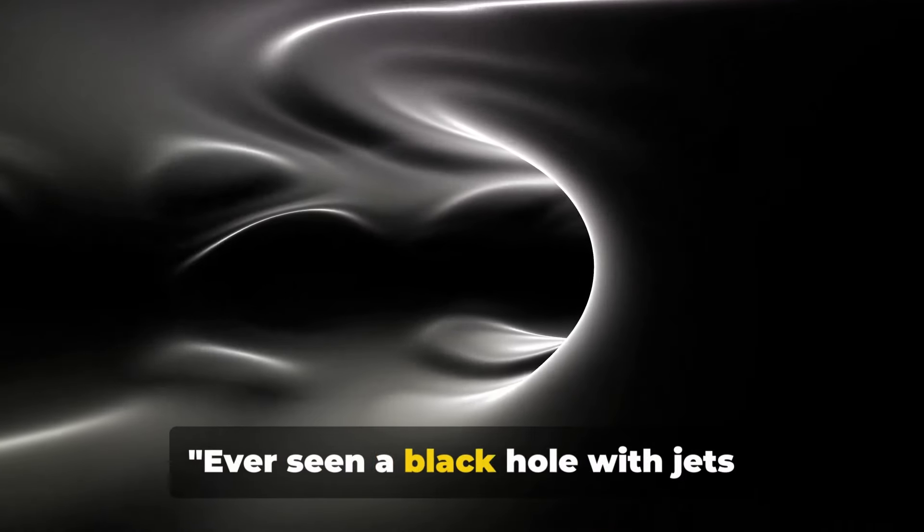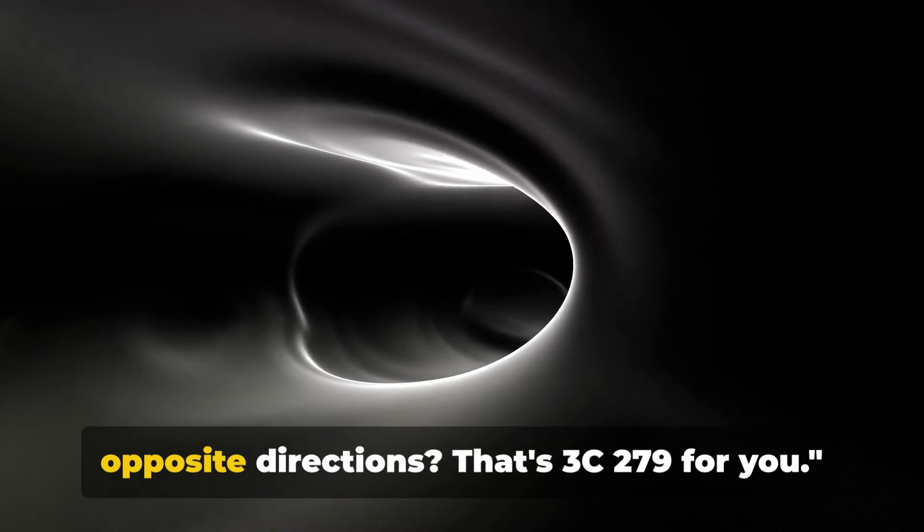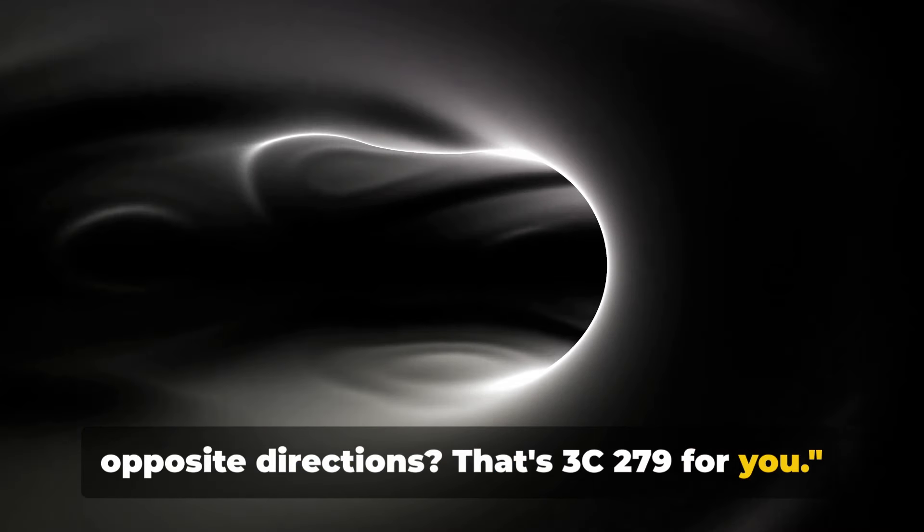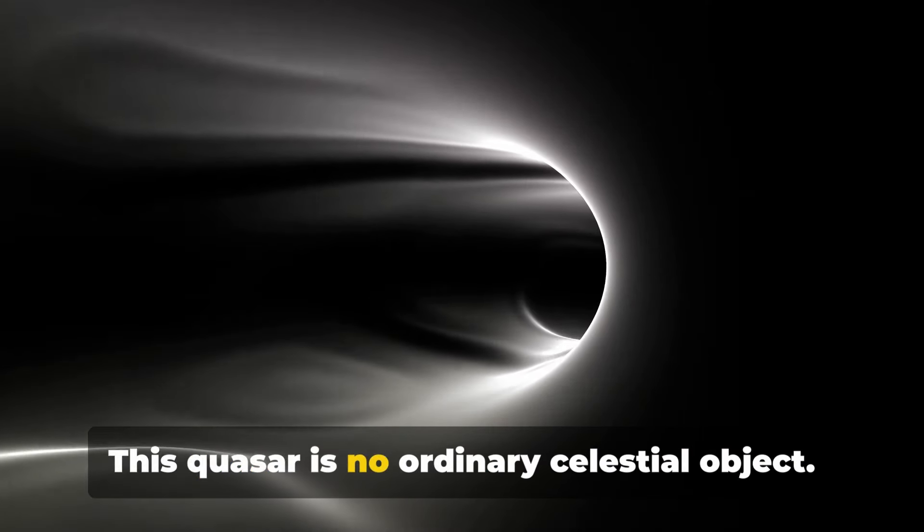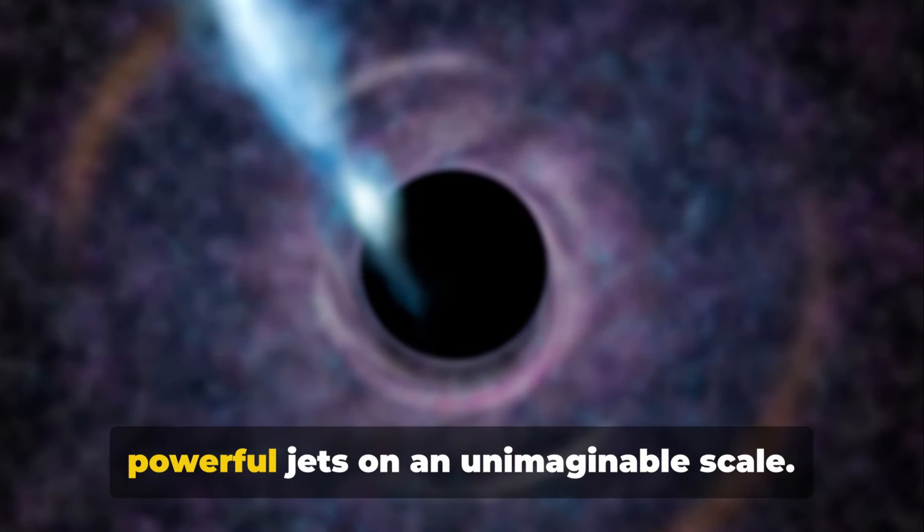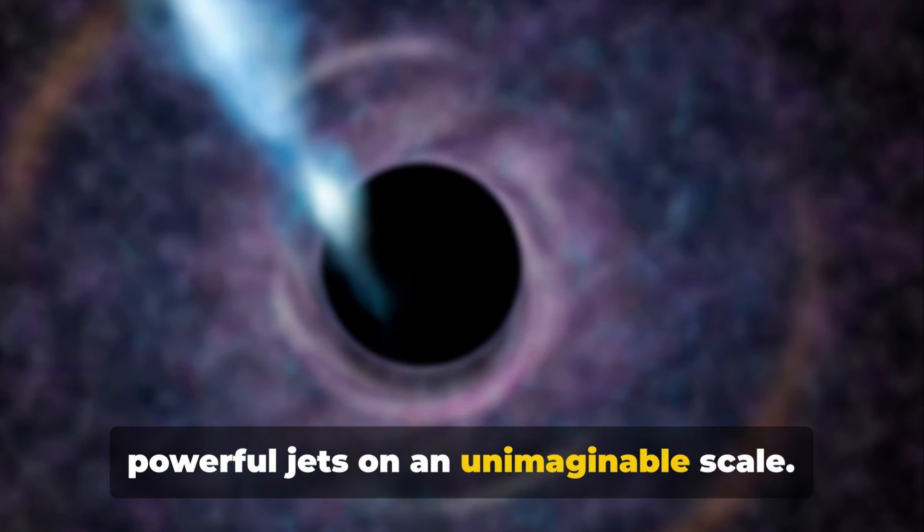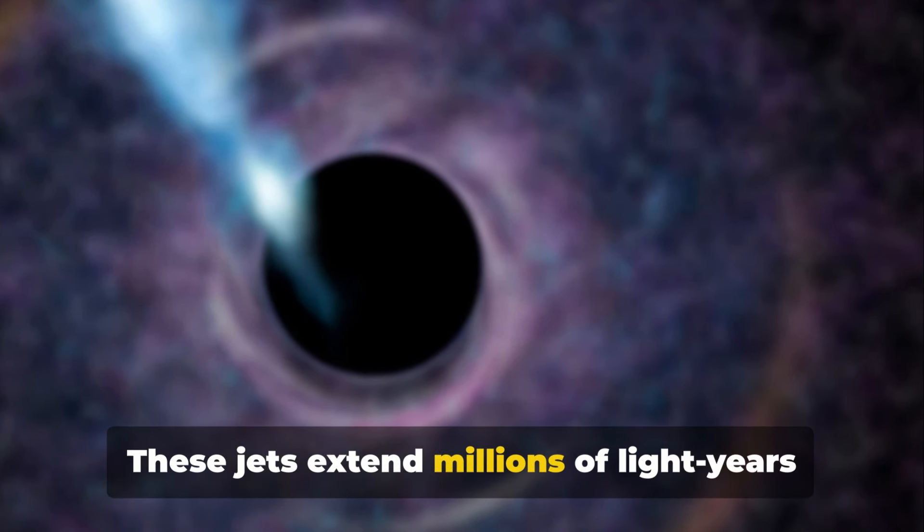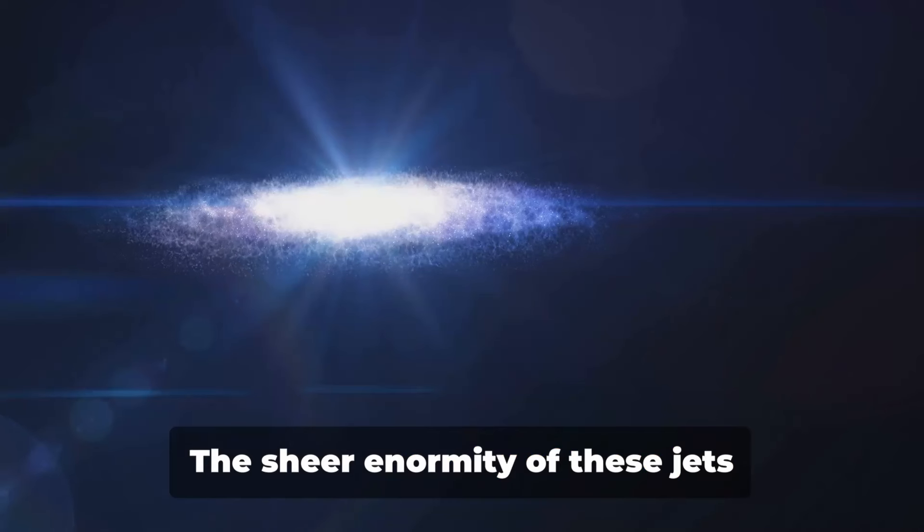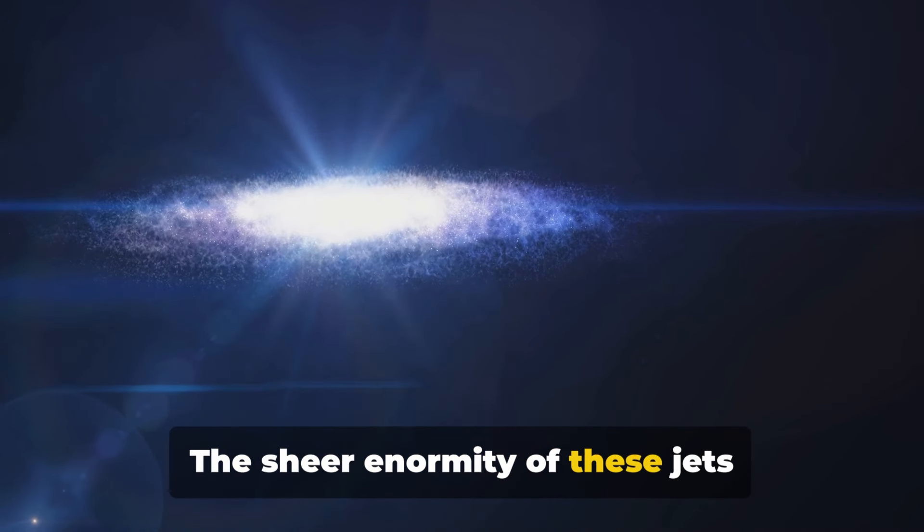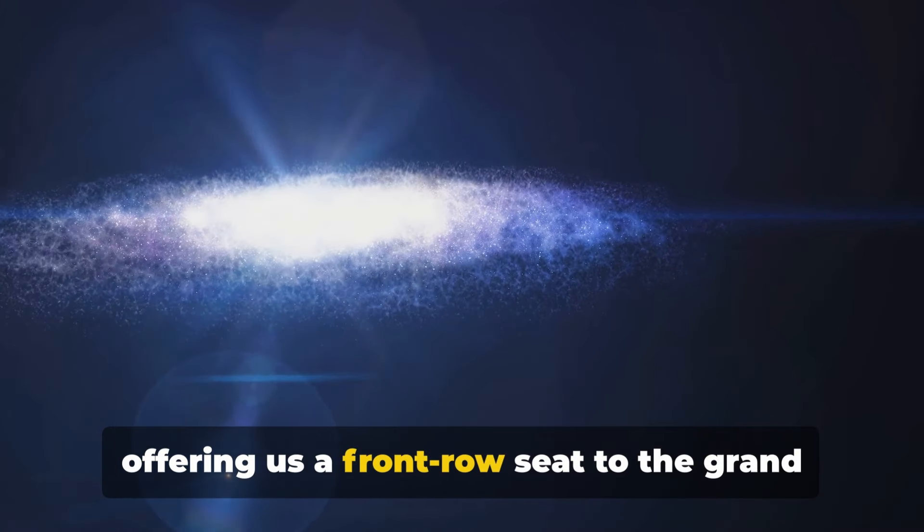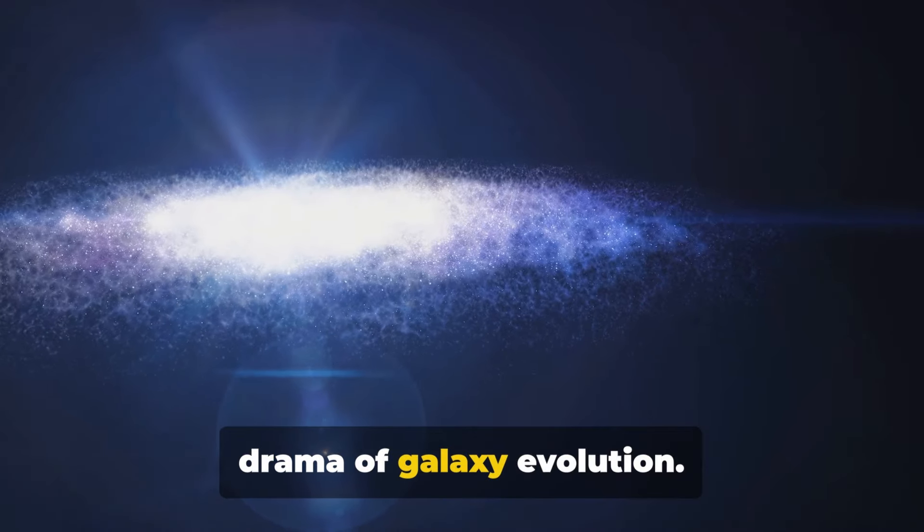Ever seen a black hole with jets stretching millions of light-years in opposite directions? That's 3C279 for you. This quasar is no ordinary celestial object. It's a cosmic powerhouse that shoots out powerful jets on an unimaginable scale. These jets extend millions of light-years in opposite directions, a spectacle that's hard to fathom. The sheer enormity of these jets illuminates vast regions of space, offering us a front-row seat to the grand drama of galaxy evolution.